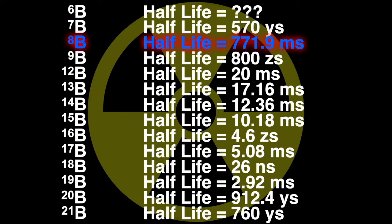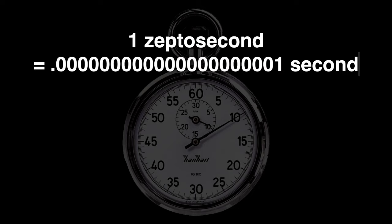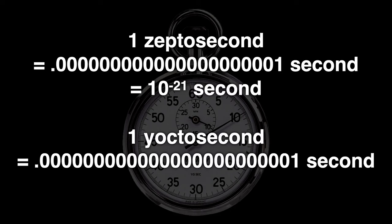Some of the half-lives are measured in time units most people have never heard of. Aside from ms, which stands for milliseconds or thousandths of a second, we also see a time unit zs and another time unit ys. The zs stands for zeptoseconds — a billionth of a trillionth of a second, 10 to the minus 21 seconds. And ys stands for yoctoseconds, a trillionth of a trillionth of a second, 10 to the minus 24 seconds. Light moving at 300,000 kilometers per second cannot travel across even a thousandth of the diameter of an atom in a yoctosecond.